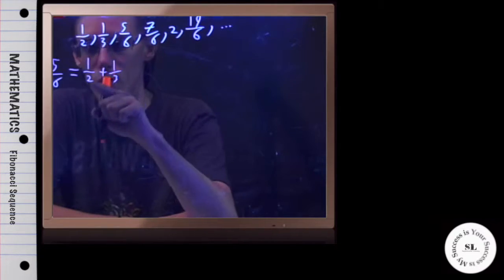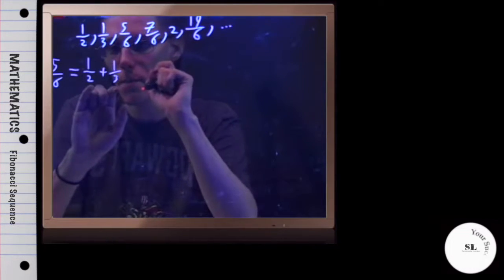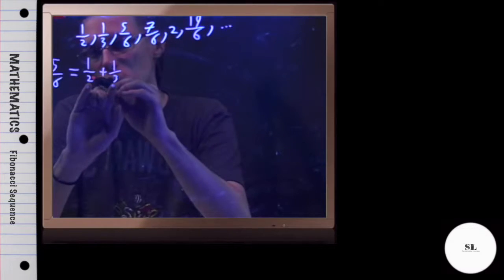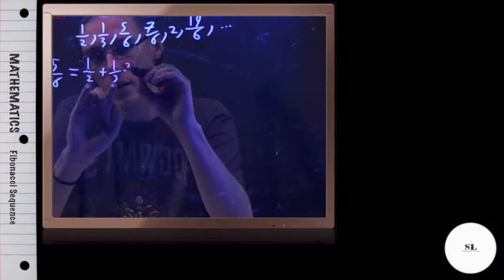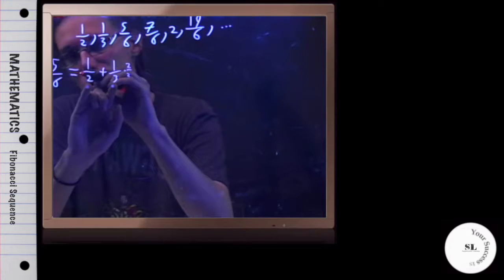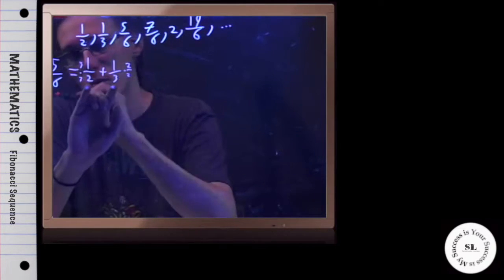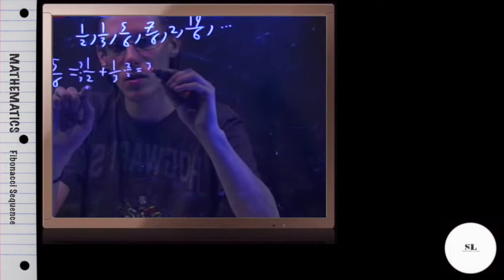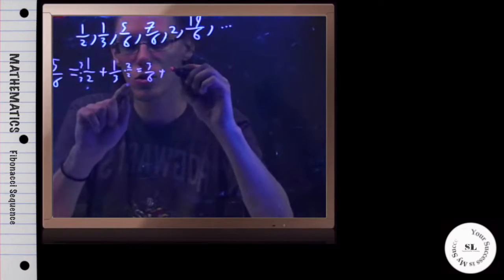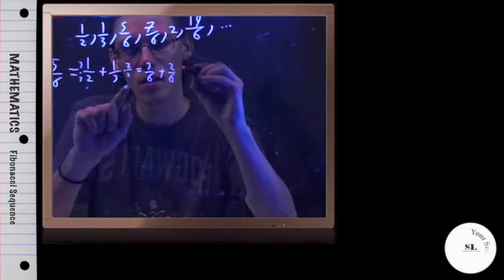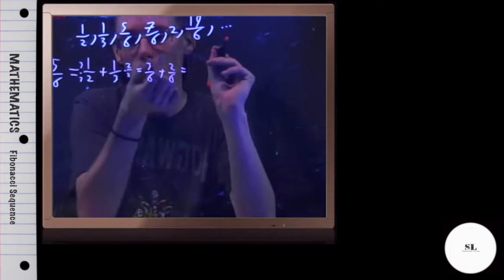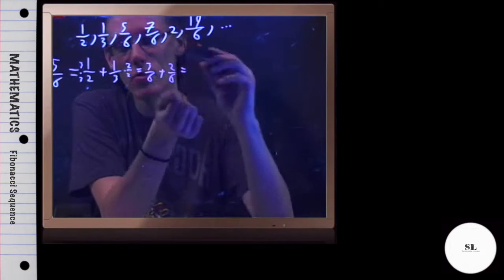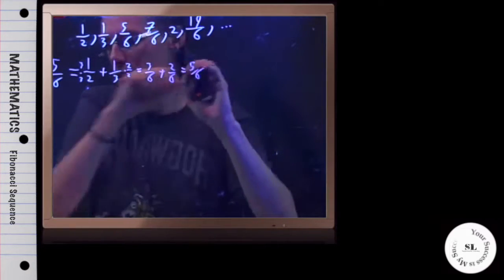So in order to add these fractions, I need the denominator to be the same. So I'll multiply 2 on the top and bottom over here, and I'll multiply 3 on the top and bottom over here. And if I do that, I'm going to get 3 over 6 plus 2 over 6. And when you add fractions, as long as the denominators are the same, you just add straight across.